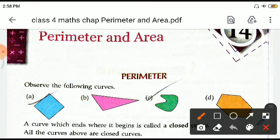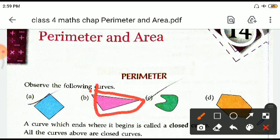See in this triangle, let us suppose that this triangle begins from this point and then it travels here, then here, and then it is back here. So it returns back to the same point from where it began. So this is called a closed curve.